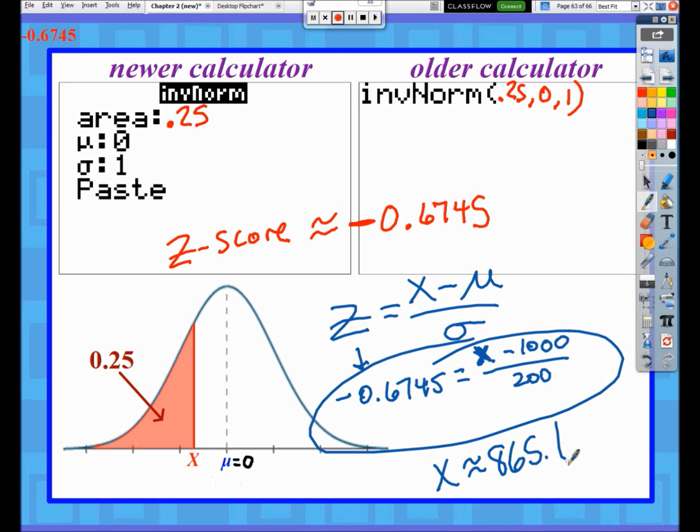You can just put in a standard normal distribution, but the answer it tells you initially is the z-score, and then you could do the work kind of a long way. You could multiply the 200 over to the z-score and then add the 1000 over, and that's where you're going to get the 865.1.